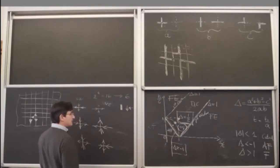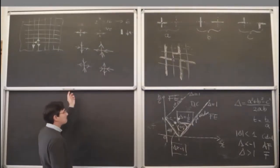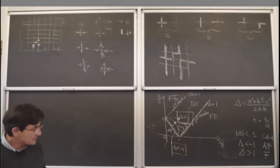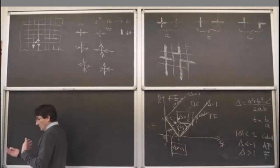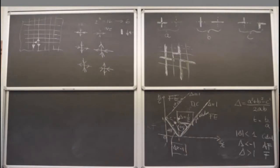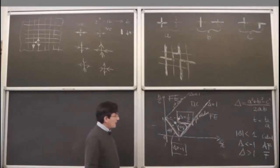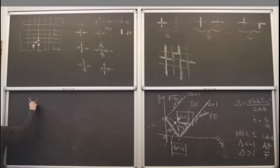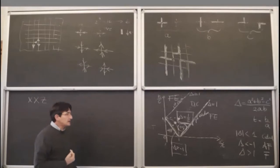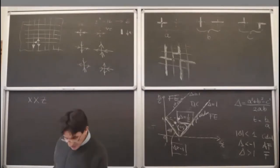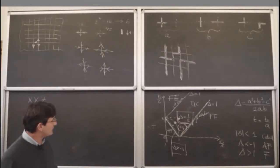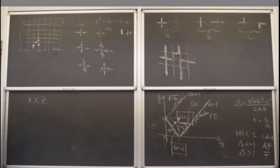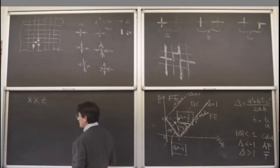Let us comment on the relation between the six-vertex model and the XXZ chain. There is the standard correspondence between classical two-dimensional systems and quantum (1+1)-dimensional systems. The six-vertex model can be thought of as an XXZ Heisenberg quantum spin chain with evolution in discrete imaginary time. The eigenvectors of the Hamiltonian of the XXZ chain are the same as the eigenvectors of the transfer matrix of the six-vertex model.